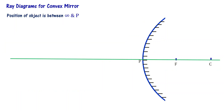Let us say that the object is positioned between infinity and P, where P represents the pole of the mirror and infinity is a point far away from the mirror surface. We have object AB placed here. What I want to do is draw a ray diagram for point A first. To represent point A in the image, I need two rays, which I will draw using the rules we have just learned.